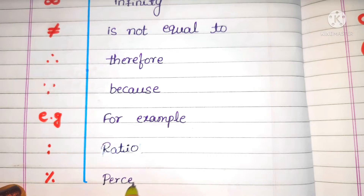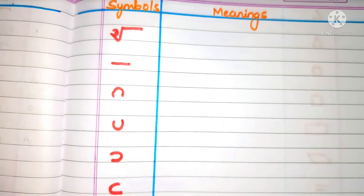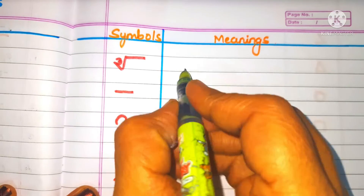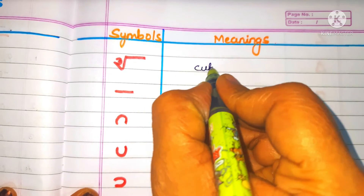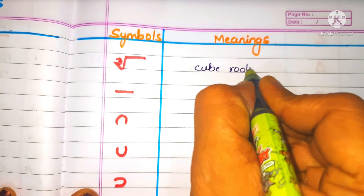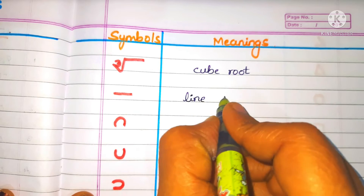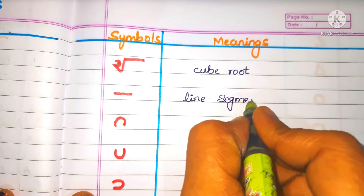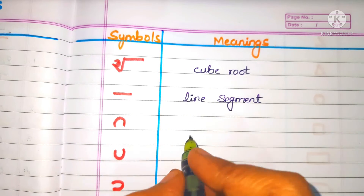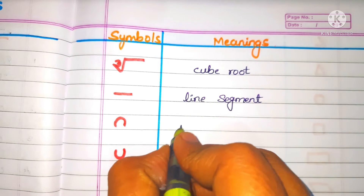Ratio. Percent. Cube root. Line segment.